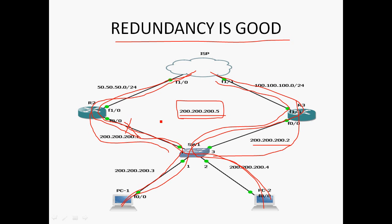How does the router take on the active or standby role? For example, R2 is one router and R3 is another. If a router is in active state, the traffic goes through that router. If it is in standby state, it cannot send any traffic until it becomes active. It sends hello packets at certain intervals, and through the hello packets the active state and standby state are selected.